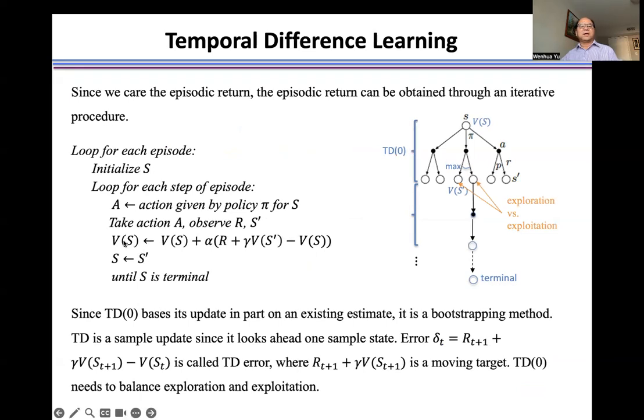So here is the TD(0) procedure for the prediction. That means we start from state S. And then we take action, we select the action. For example, action A at this current state.